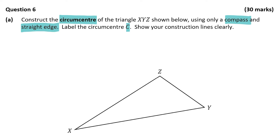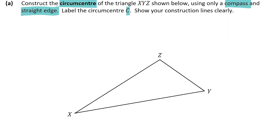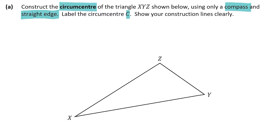I'm not going to be able to do this here because I don't have a compass, so I'm just going to demonstrate. Find the perpendicular bisector of XY first. Put one end of the compass — the end without the pencil — on X and construct an arc, making sure it goes over halfway on the line. Then put the compass on Y and construct another arc.